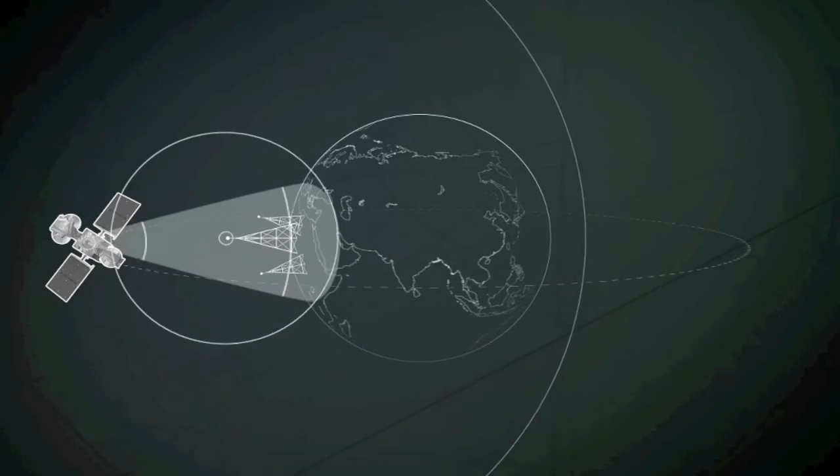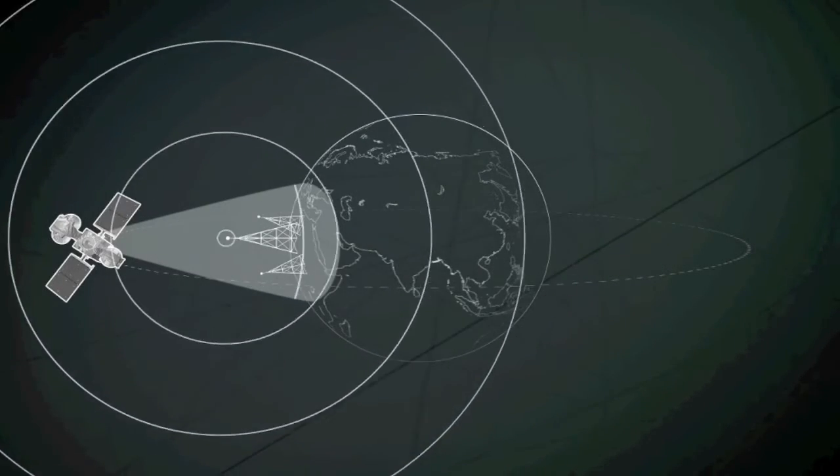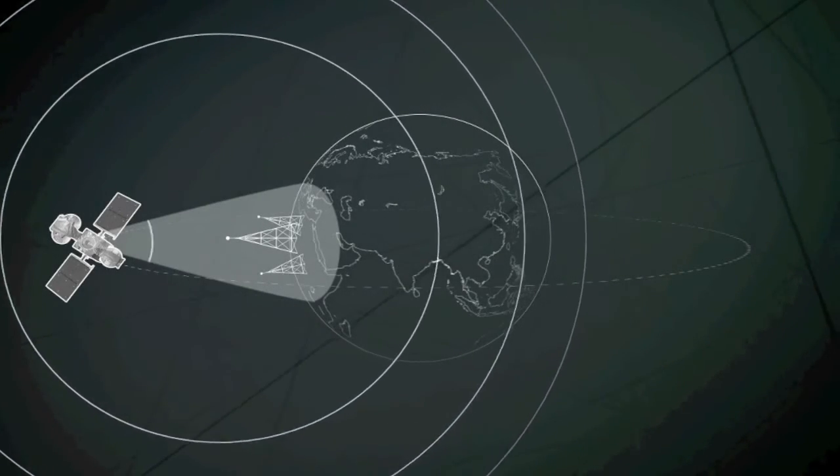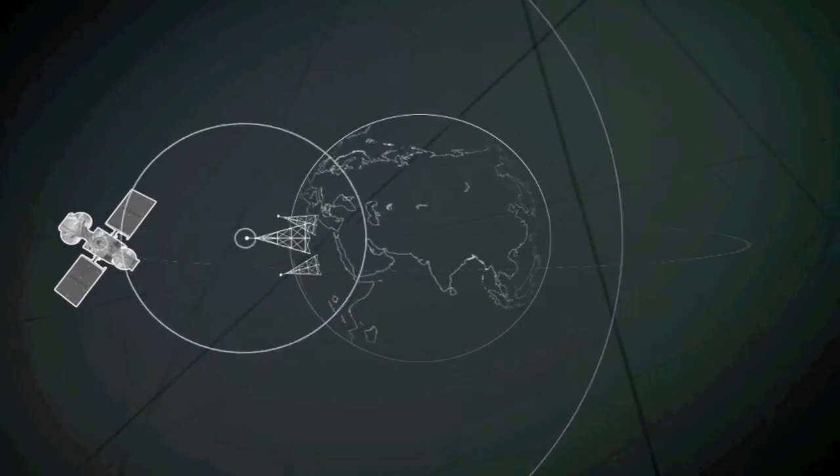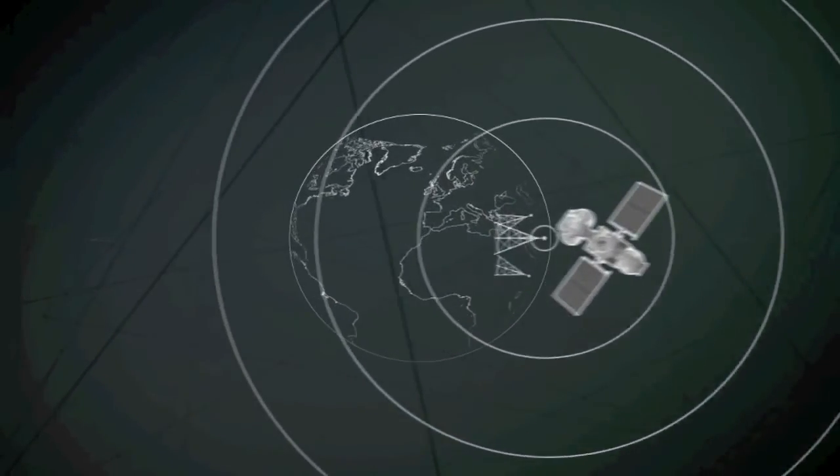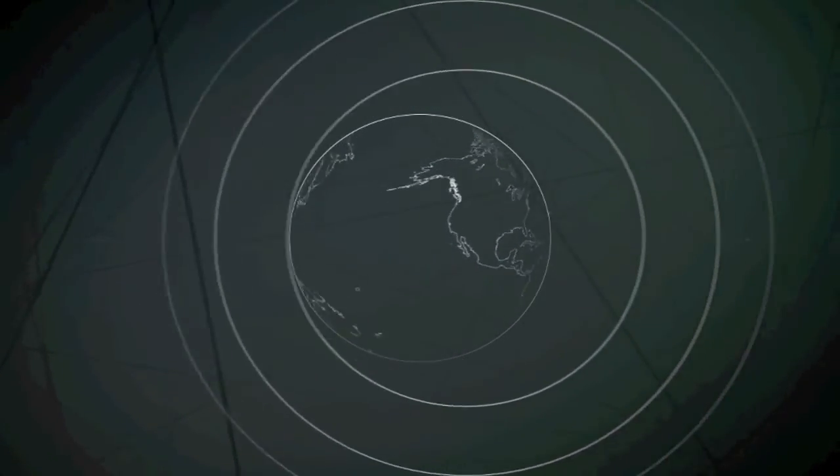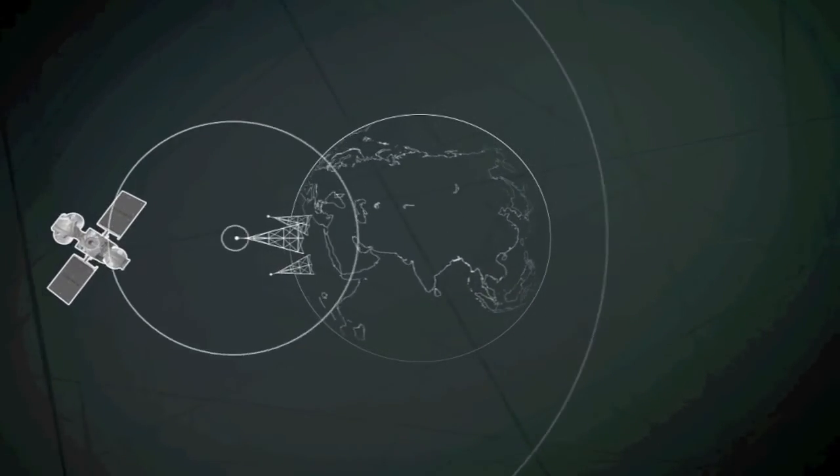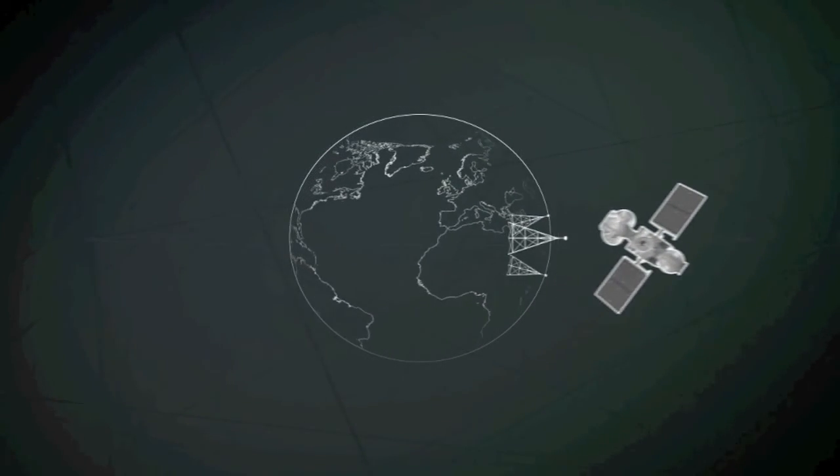The geostationary orbit is sometimes known as the Clark Belt after the British writer Arthur C. Clark. In 1945, he proposed using the orbit for global communications, building on the ideas of earlier scientists.